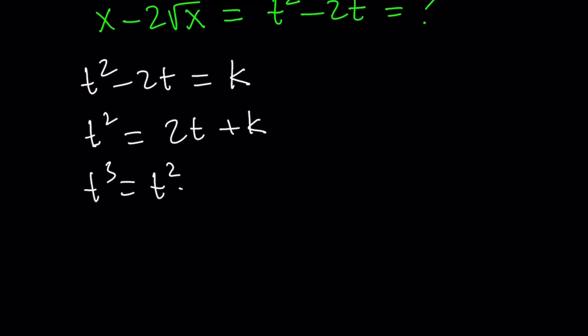What is t cubed? t squared times t. Simple. So let's go ahead and multiply t squared, which is this, by t. And that's going to give us 2t squared plus kt. This is t cubed. Remember that all the time.